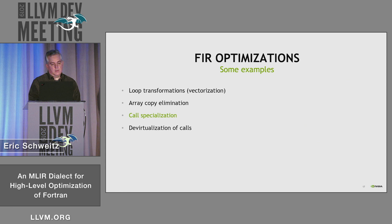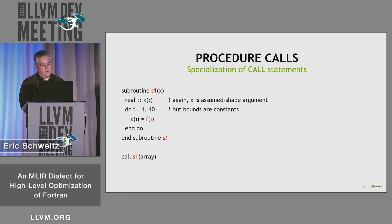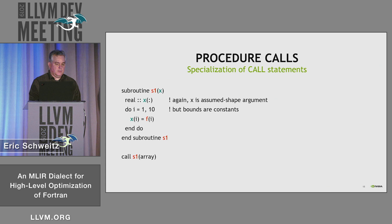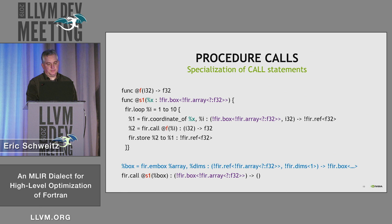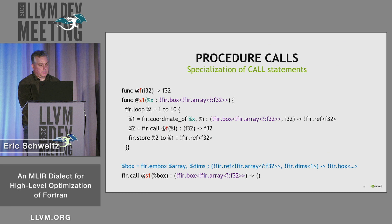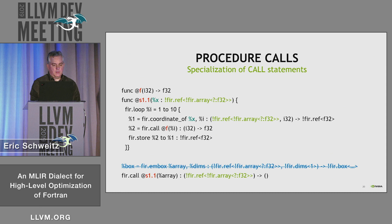Call specialization is our third example. Here we have a call to S1 again. S1 takes an assume-shape argument, and it knows that the array vector has 10 elements and is going to operate on those 10 elements. When we lower that to FIR, we have an inbox operation to pass all the information to S1. In S1, we can tell that we didn't really use any information out of the box because we already knew the bounds were one to 10. So we can specialize this call to get rid of the inbox operation and just pass a bare reference to X.